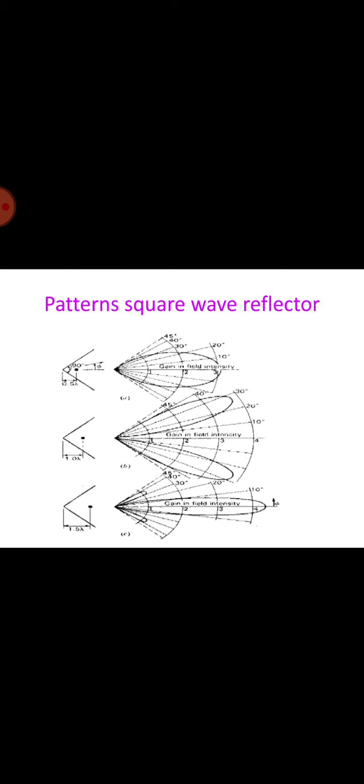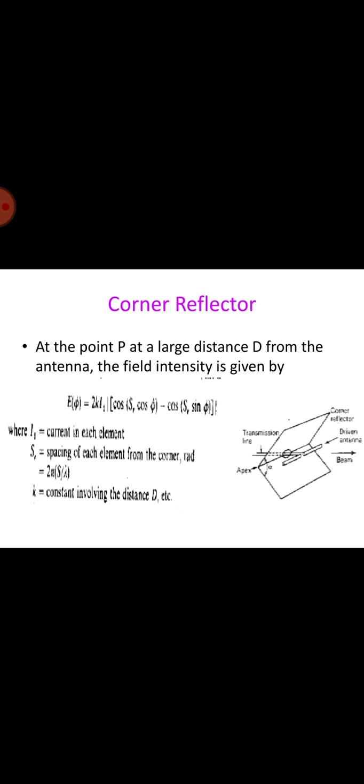The figure shows the patterns of square corner reflector for a spacing of 0.5 lambda, 1 lambda, and 1.5 lambda - the spacing between the antenna and the reflector.